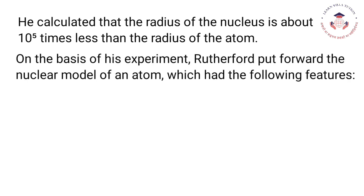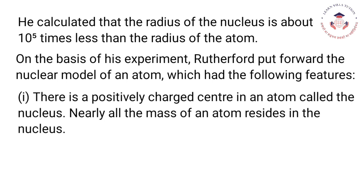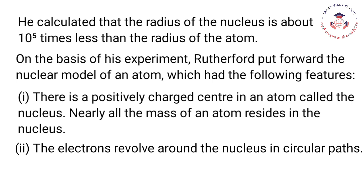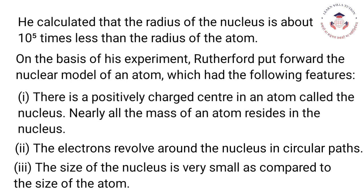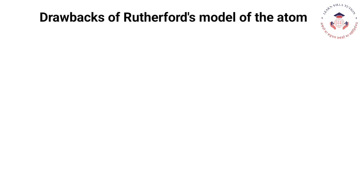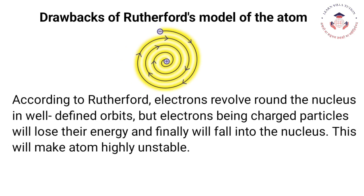On the basis of his experiment, Rutherford put forward the nuclear model of an atom, which had the following features: there is a positively charged center in an atom called the nucleus; nearly all the mass of an atom resides in the nucleus; and the electrons revolve around the nucleus in well-defined orbits. However, electrons being charged particles would lose their energy and finally fall into the nucleus, making the atom highly unstable.